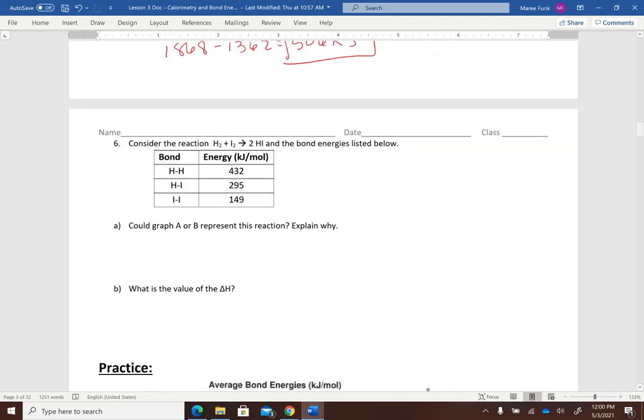Here we are asked to do the same thing. We have a hydrogen-hydrogen bond and an iodine-iodine bond and then two hydrogen-iodine bonds forming. So when we break the bonds in the reactants, we're going to need to break one hydrogen-hydrogen bond and one iodine-iodine. So 432 plus 149 and we get 581.